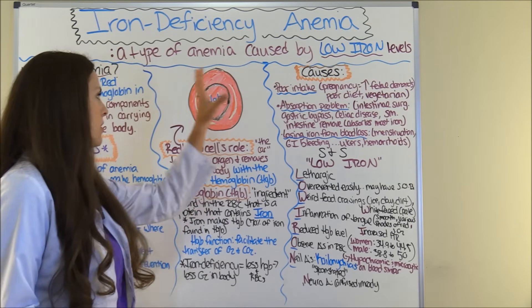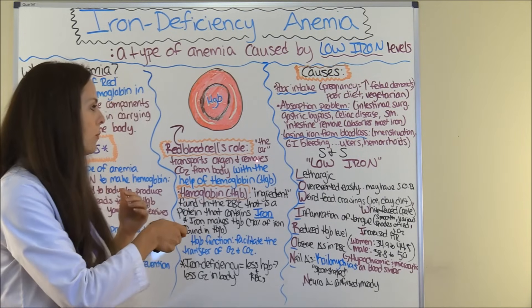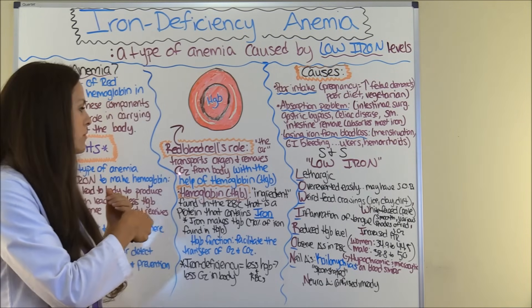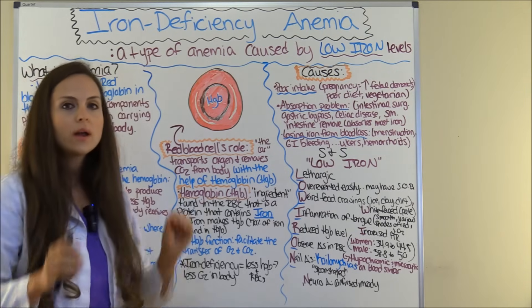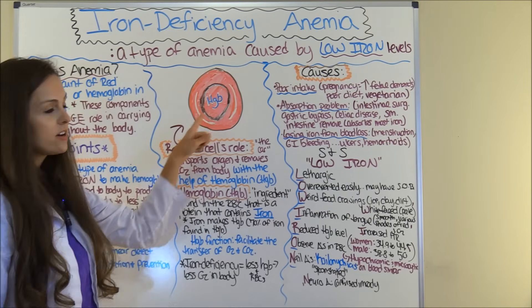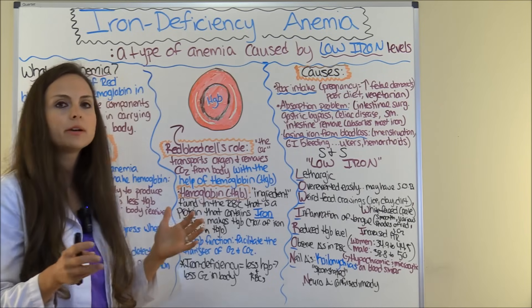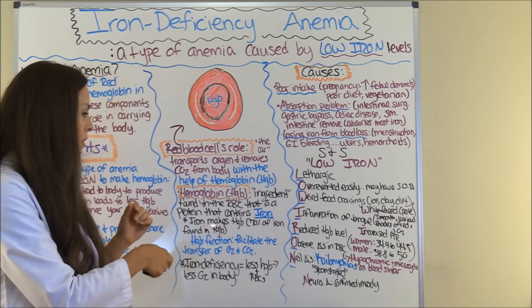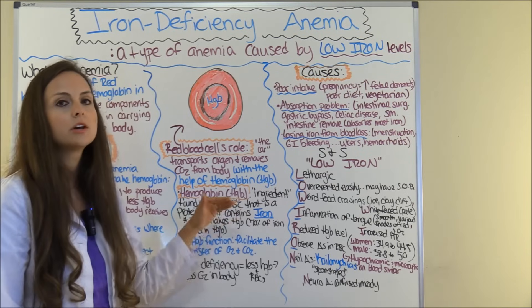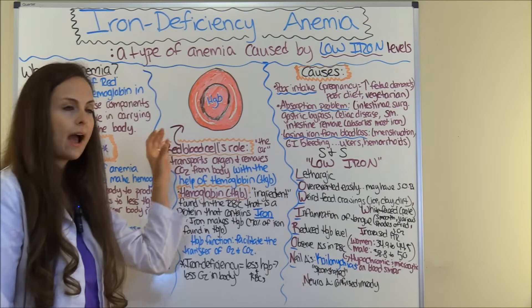Here we have a red blood cell — our key player. The red blood cell acts as the car, functioning to transport oxygen and remove carbon dioxide from the body with the help of hemoglobin. Hemoglobin is an ingredient found in the red blood cell — it's a protein that contains iron. So hemoglobin and iron go together: 70% of your iron is actually found in your hemoglobin. You need iron to make hemoglobin, and hence to play the whole role in transporting oxygen throughout the body.